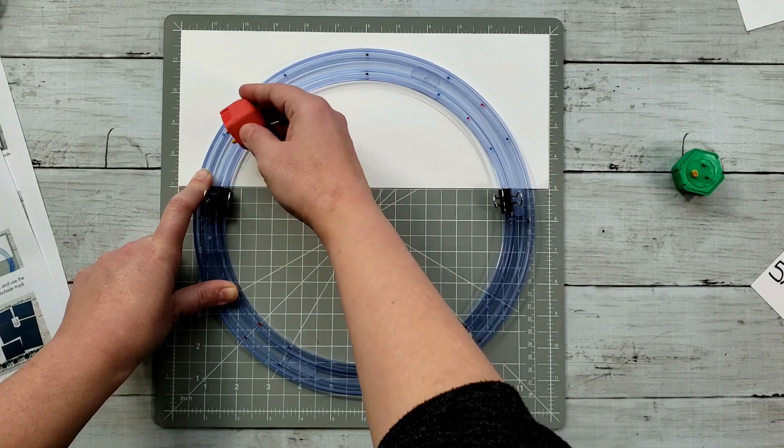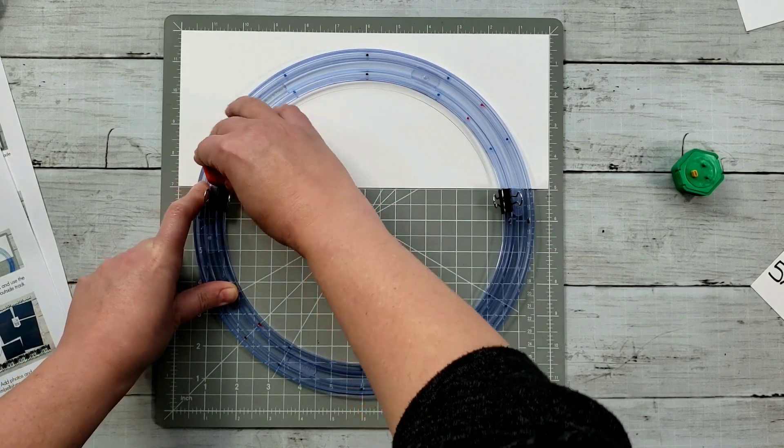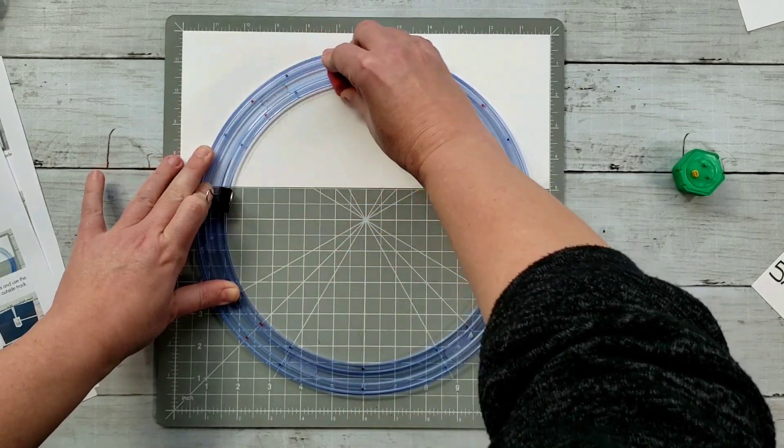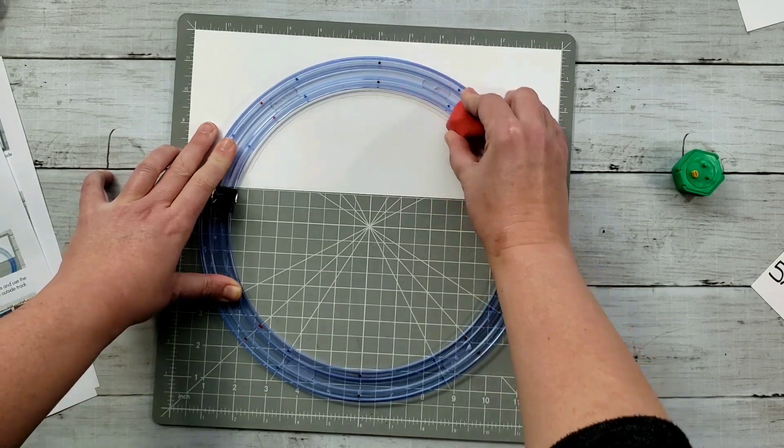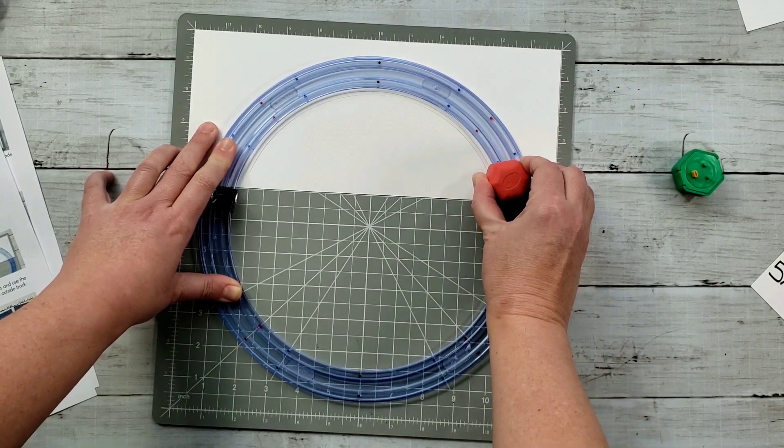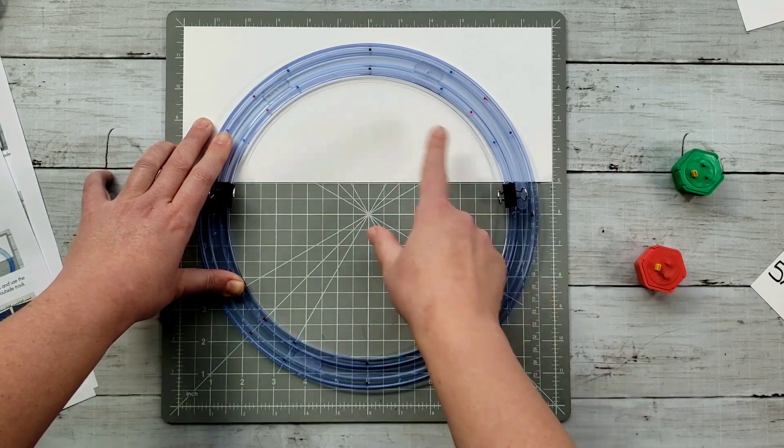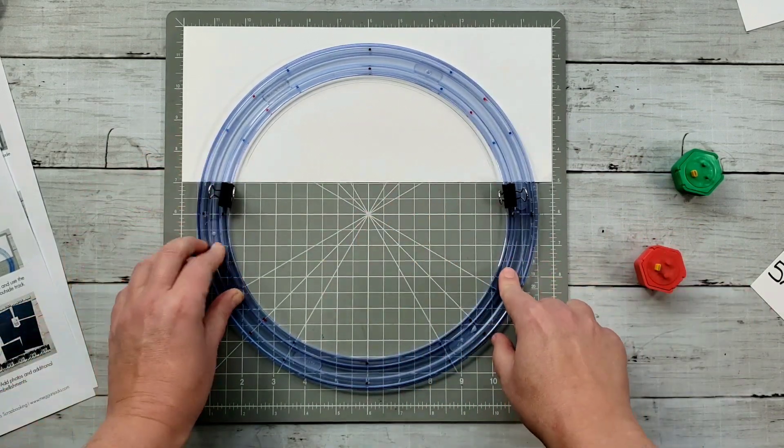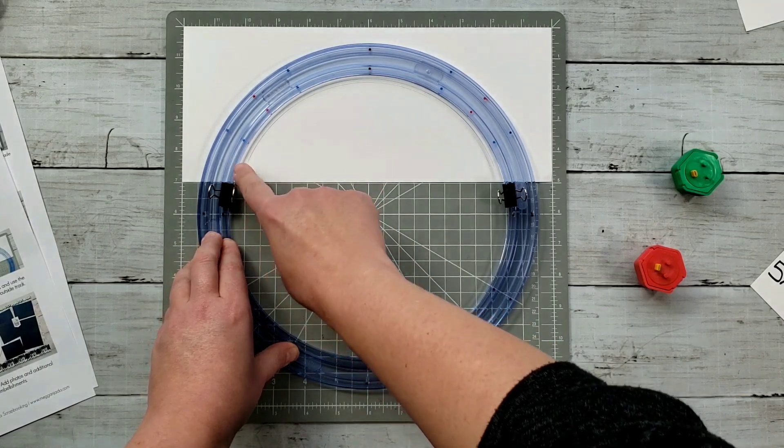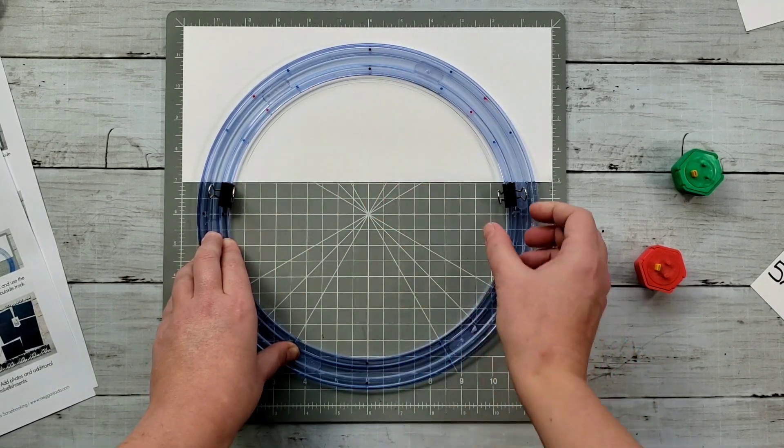Now I'll grab my red blade and I'll do the same thing with the red blade. Now, remember you always want to start with either the blue or the green blade if you're cutting on the inside track, the one that's furthest away from the track. So now I've got, I did my green blade first. I did my red blade. So now I'm done with my inside track.